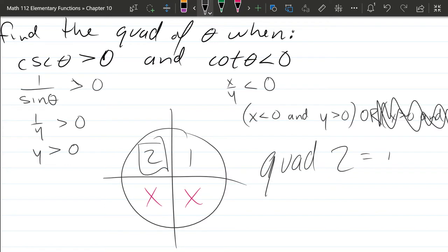So our answer is quadrant 2, or if you're using Roman numerals, that's II.